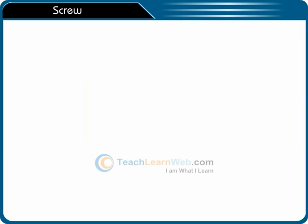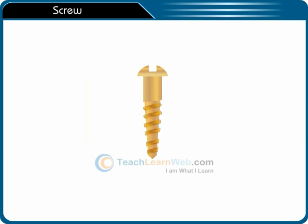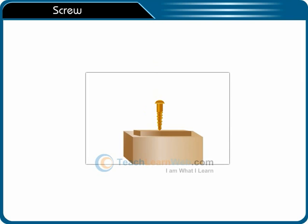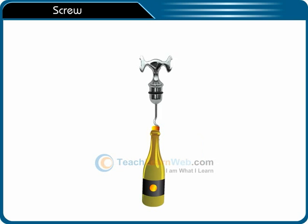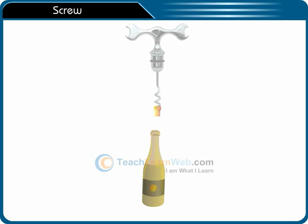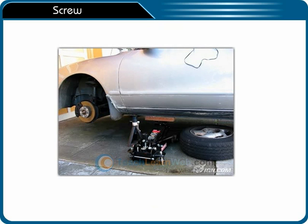Screw: A rotating inclined plane is called a screw. They are used to fasten two pieces of wood. A corkscrew is used to pull out a cork from bottles. A screw jack is a nut and bolt arrangement used for lifting one side of a car.